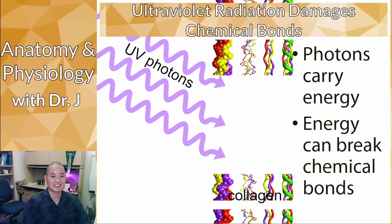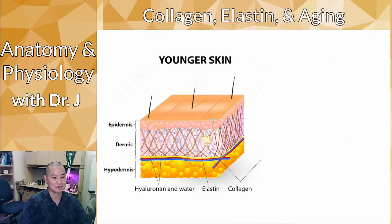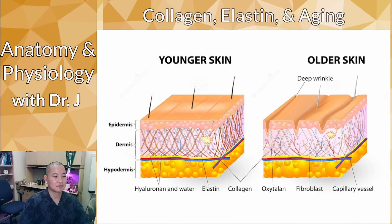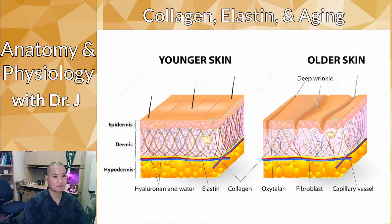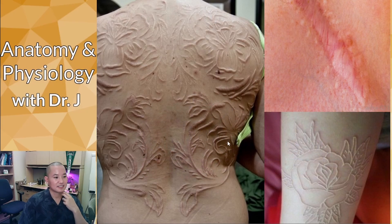Even Botox can't help eyelids that thin — you can't inject filler there either. This is also why our skin ages naturally even without sun exposure: as we age, we lose fibroblasts and our body's ability to repair the dermis declines. The damage outpaces the repair, we lose protein fibers, and we start to form wrinkles by losing the elasticity and turgidity of our skin.